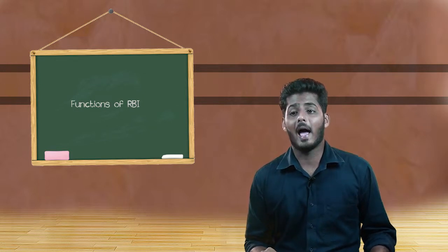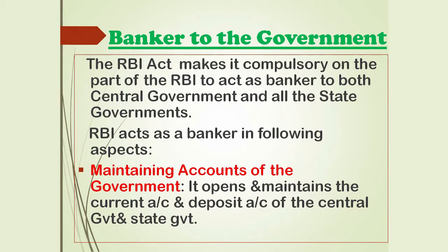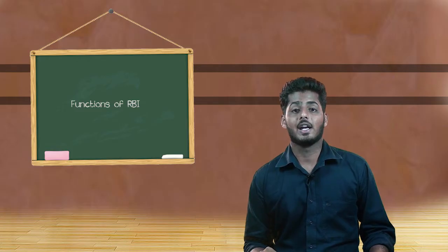The next point is banker to the government. The RBI Act makes it compulsory for RBI to act as banker to both the central government and all state governments. RBI acts as banker in the following aspects. The first one is maintaining accounts of the government — it opens and maintains the current account and deposit account of the central government and state governments.